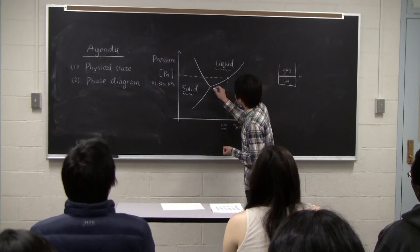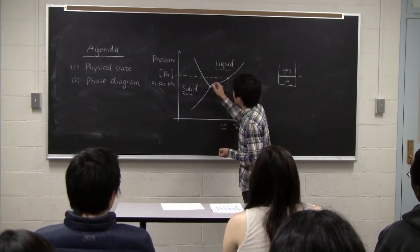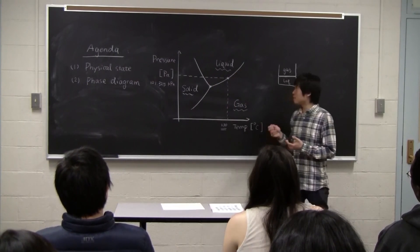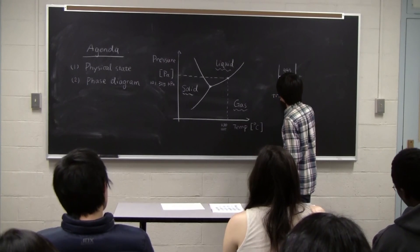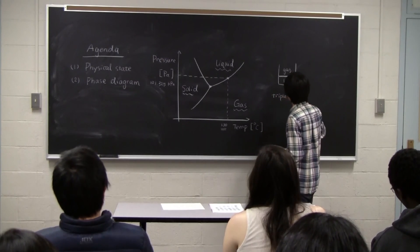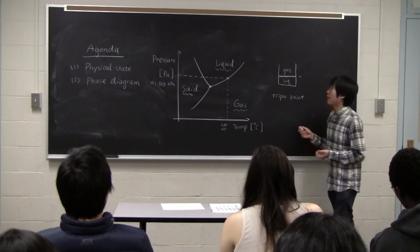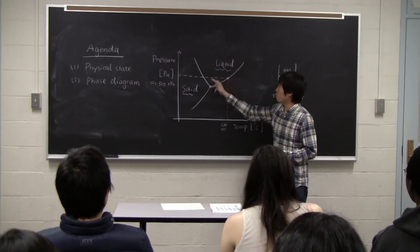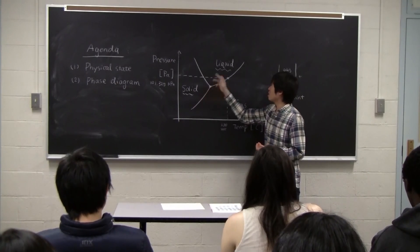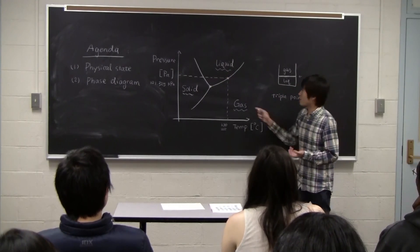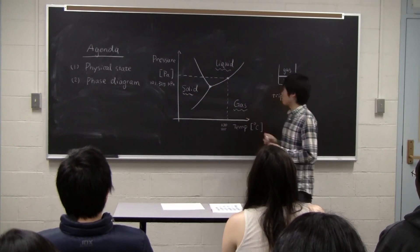And there's an intersecting point of these three lines. This intersecting point is called the triple point. At this triple point, we have three phases coexist. So liquid, solid, and gas can exist at this specific pressure and temperature.